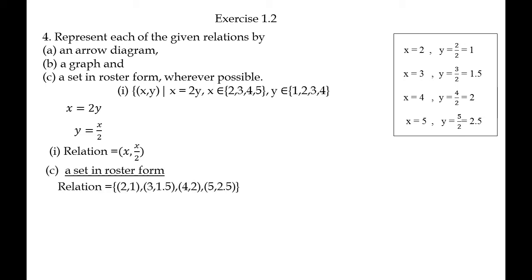X equal to 5, Y equal to 5 by 2 equals 2.5. As a set in roster form, relation equals {(2,1), (3,1.5), (4,2), (5,2.5)}. Arrow diagram: domain X, codomain Y. 2 associates with 1, 3 associates with 1.5 but 1.5 is not in the codomain, 4 associates with 2, 5 associates with 2.5 but 2.5 is not in codomain.